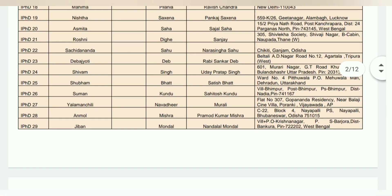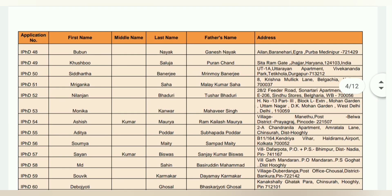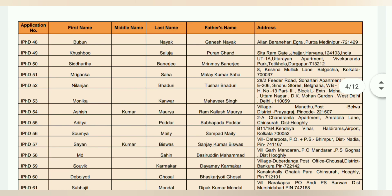Here you can see which student has been selected by name. One by one, you can see the application ID, first name, middle name, last name, father's name, address, etc.